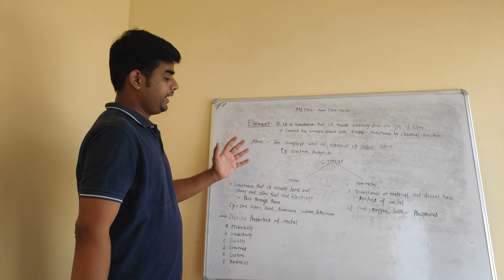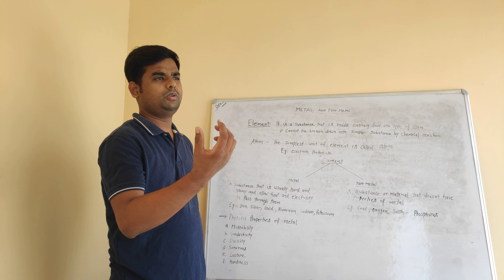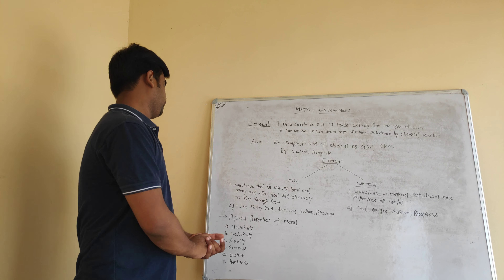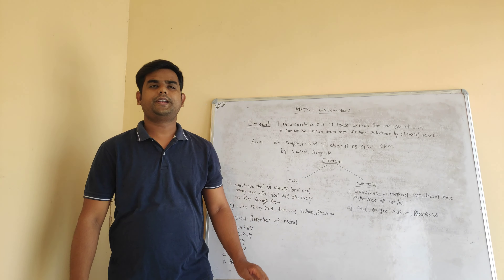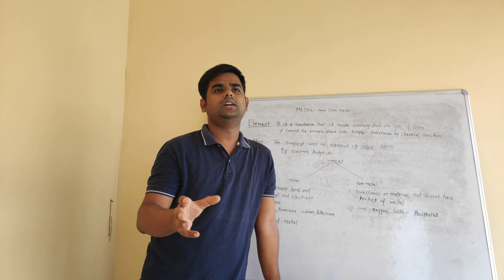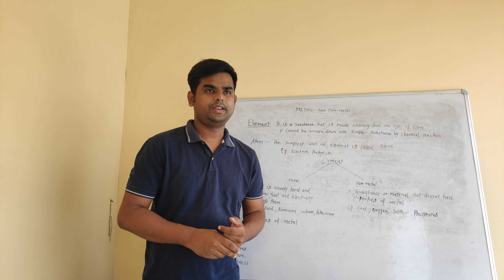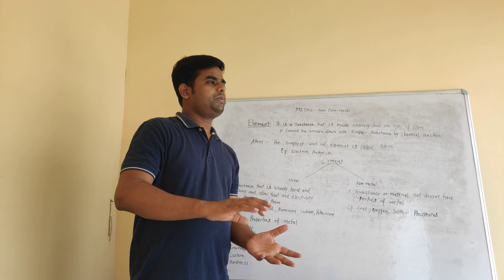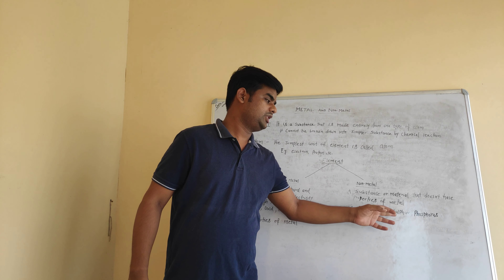Basically, metal is very hard. But some metals are exceptions — like sodium or potassium. These metals are very soft; they can be cut with a knife. Now, what happens in nonmetal? Nonmetal is a substance that does not have the properties of metal. Properties like ductility and malleability are not found in nonmetals. Examples of nonmetals are coal, oxygen, sulfur, and phosphorus.